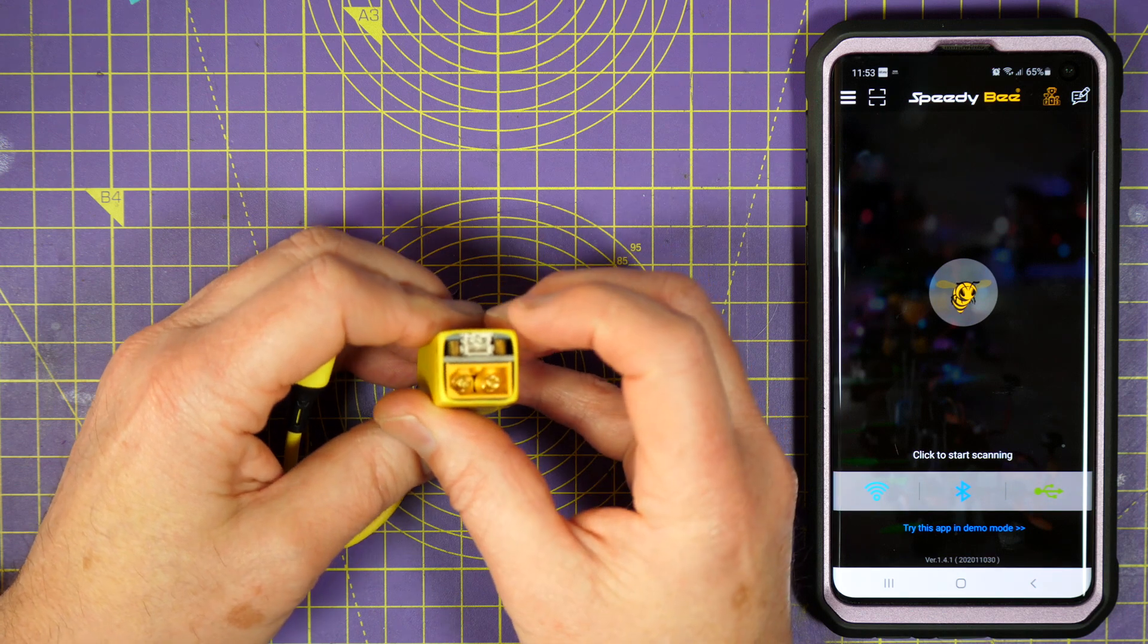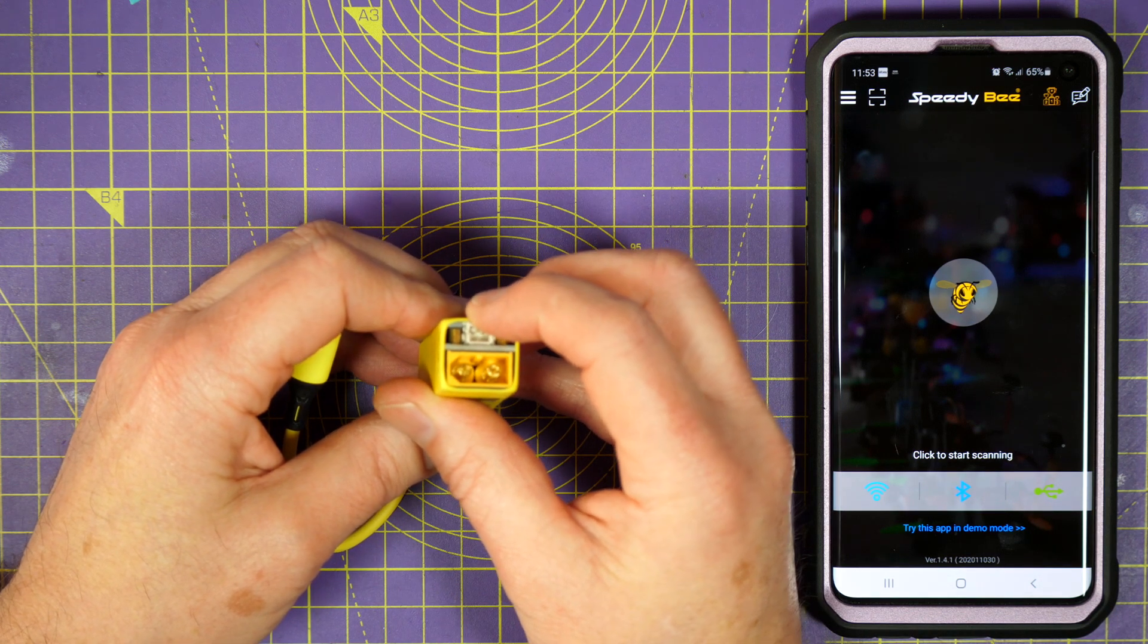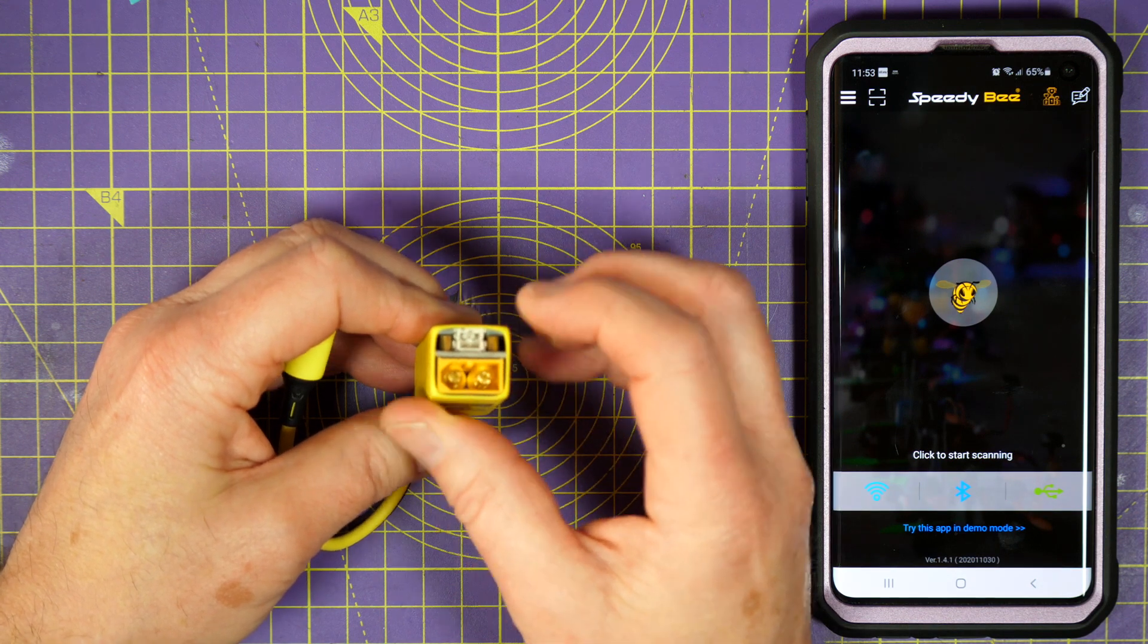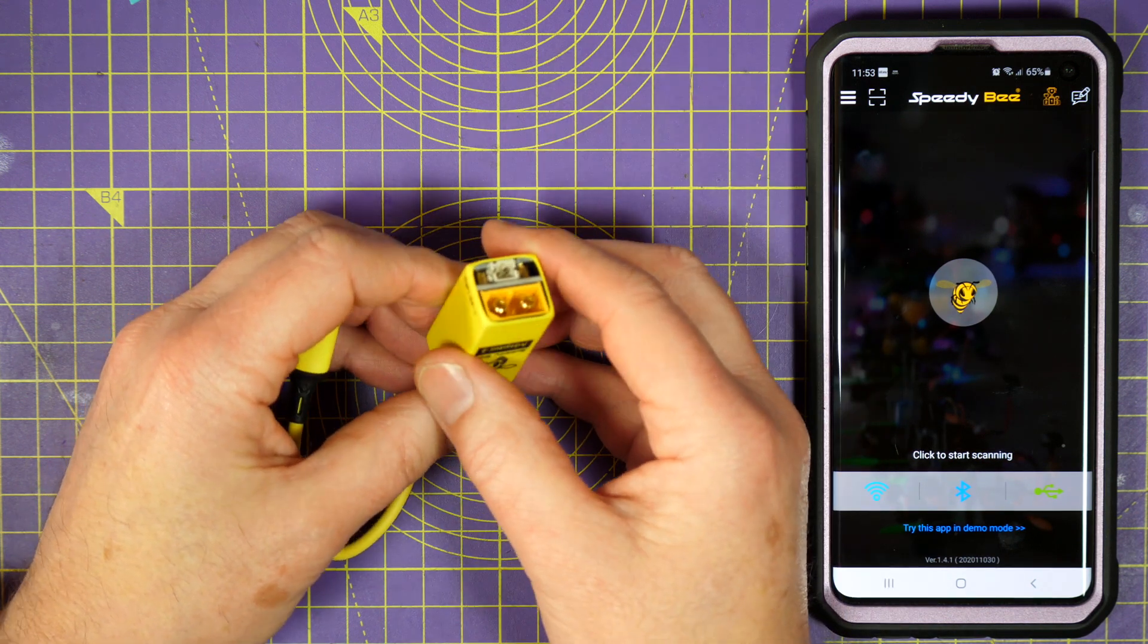This has also got a PH2 connector so you can use a 1S LiPo to power this as well. And that means you can power this from 1S to 6S, so no one's going to be left out.